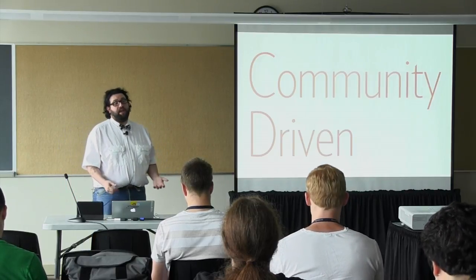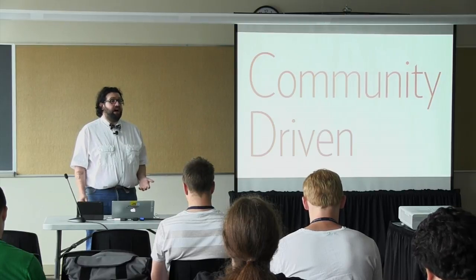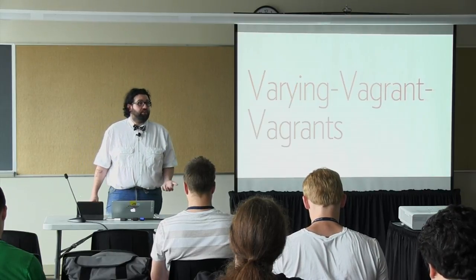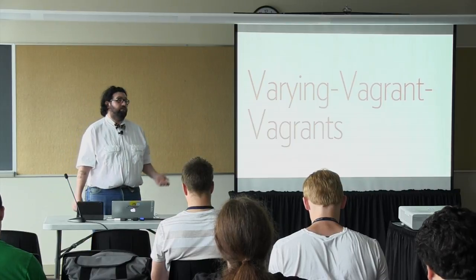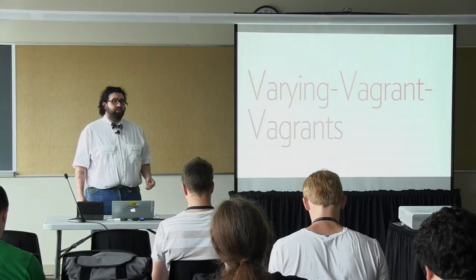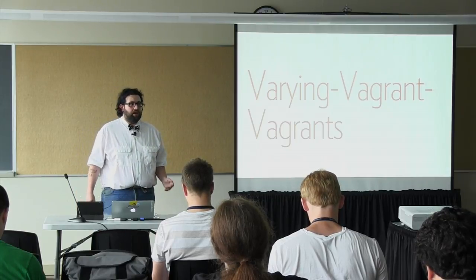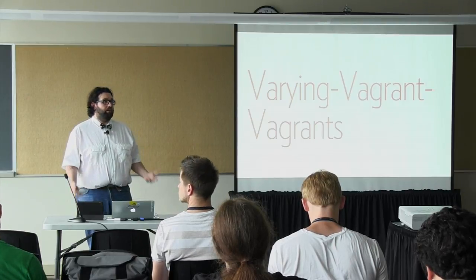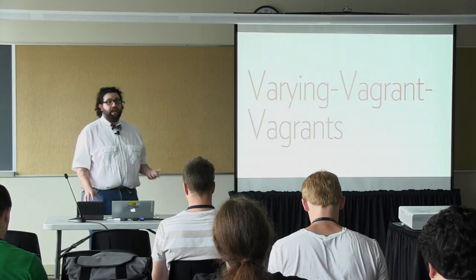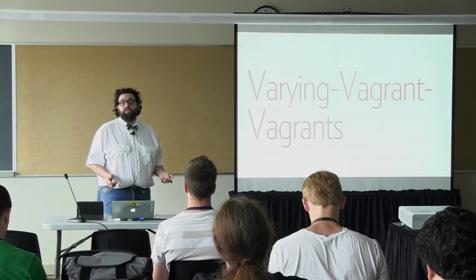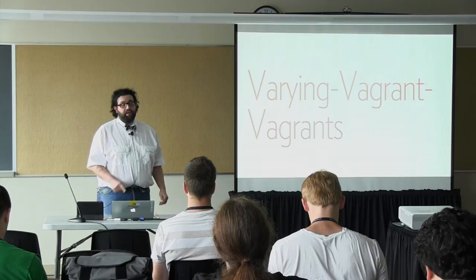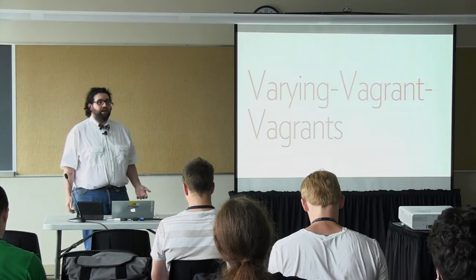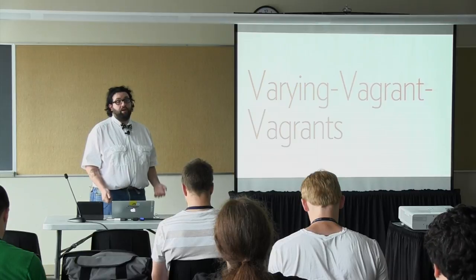One of the ways we've been able to measure the success of this transformation is how well the community adapted to it. There's a community project called Varying Vagrant Vagrants — a community-developed Vagrant environment for WordPress. It was originally designed as an example of how to use Vagrant, but the community decided it encompassed a lot of what they wanted, and it's really grown over the last year and a half. When we announced these changes, it was within a day that Varying Vagrant Vagrants started adding them into its repository. The community really caught on and decided this was the right process to move forward.